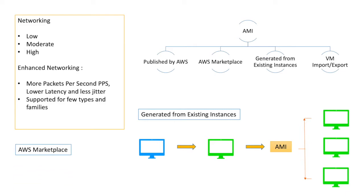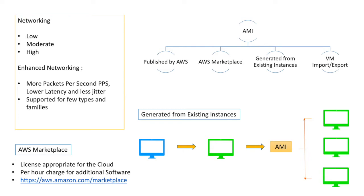One benefit of the Marketplace is licensing. When you use software in the cloud, you need to handle licenses legally. Marketplace AMIs have already adapted their licenses in a way appropriate for the cloud, so you don't have to worry about that. However, you do pay an additional charge for the software on top of the EC2 hardware cost. For example, a database image can be purchased from a marketplace vendor.